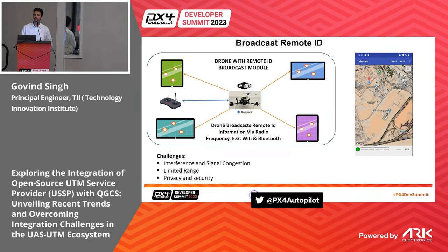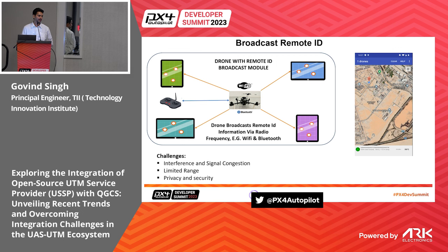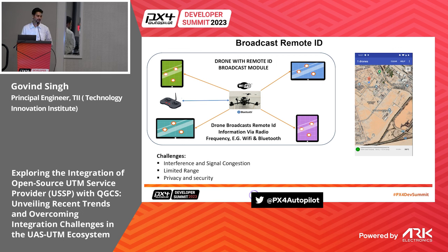Additional challenges with Wi-Fi and Bluetooth: they don't work well in dense, congested 2.4 GHz environments, leading to beacon misses and reliability concerns. Range is also limited to a few hundred meters, and improving coverage requires better antennas and physical layer tweaks. Bluetooth 5.1 or 5.2 doesn't provide more than 500 meters to one kilometer even under ideal conditions. So range, privacy, and security are the key concerns with broadcast remote ID as of now.